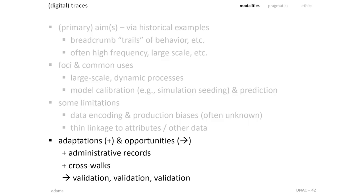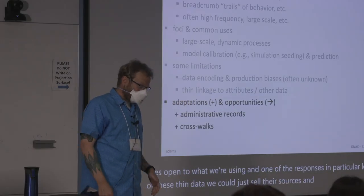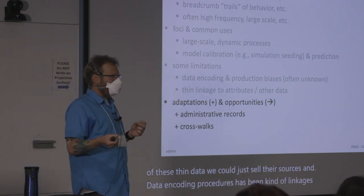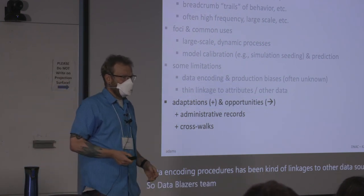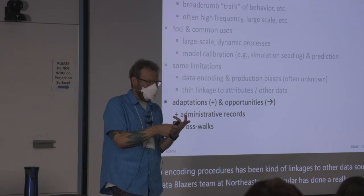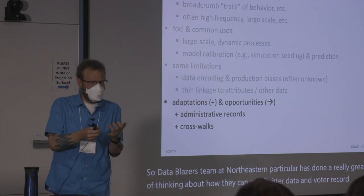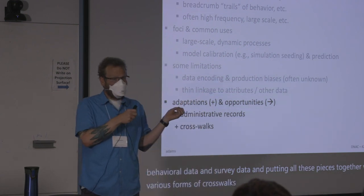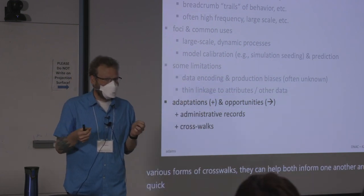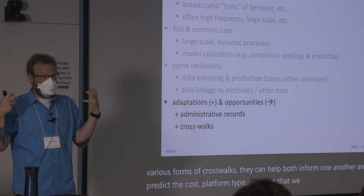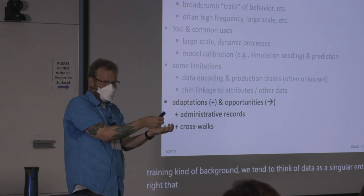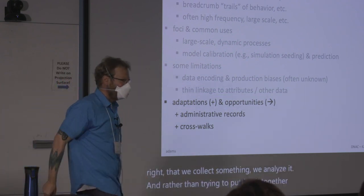One response to thin data linkages to other sources and unknown data encoding procedures has been linkages to other data sources. David Lazer's team at Northeastern in particular has done great work thinking about how they can use Twitter data, voter records, behavioral data, and survey data together via crosswalks that help inform one another and predict across platform — in ways that those of us from traditional training backgrounds tend to think of data as a singular entity to collect and analyze within, rather than putting it together with multiple resources.